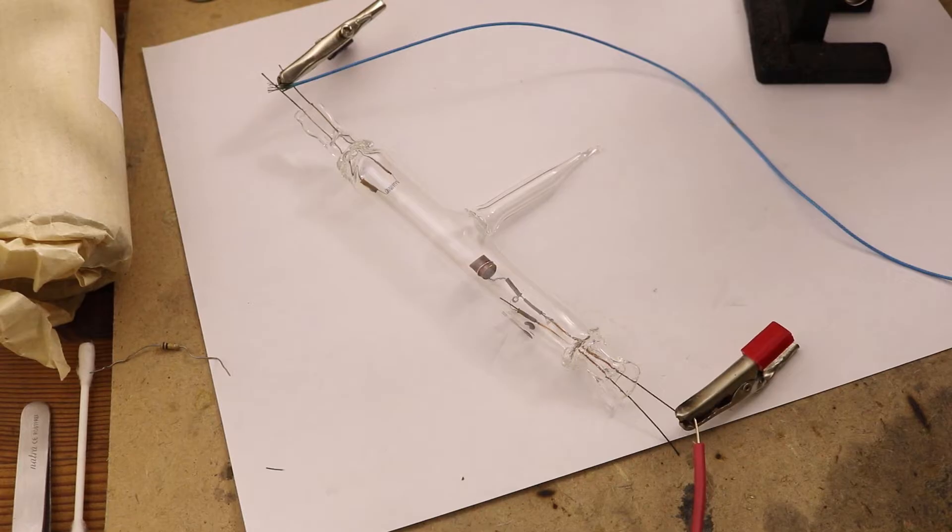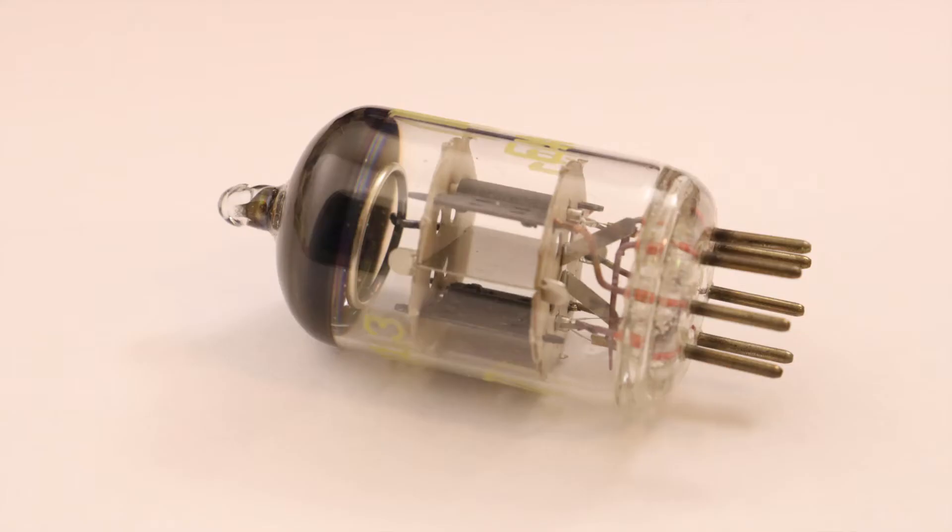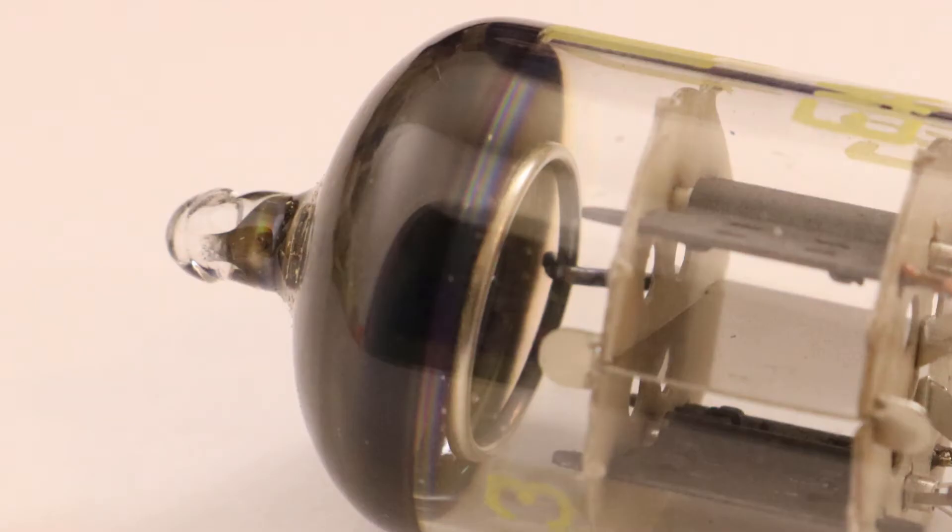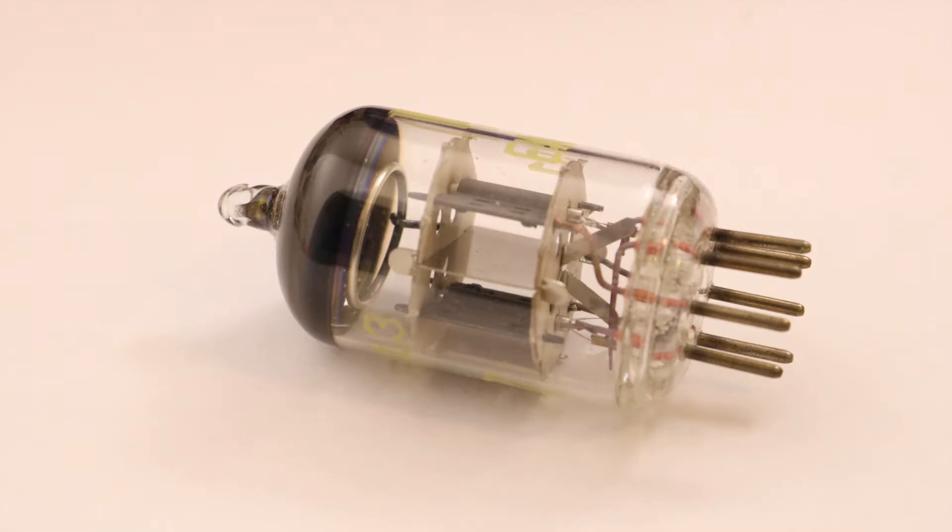In normal vacuum tubes, so-called getters are used. These are reactive metals reacting with residual gas when heated. However, they are too reactive to work with and to get stored under normal atmosphere.